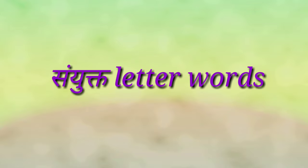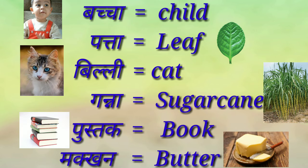Let us practice some Sanyukta letter words. Baccha — Child. Patta — Leaf. Billi — Cat. Ganna — Sugar Cane. Pustak — Book. Makhan — Butter.